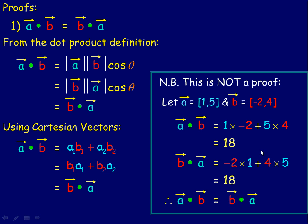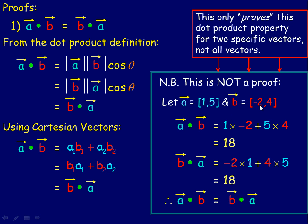Well, those are the same, that's true. But this is only an example. It is only a proof for those two specific vectors, it is not a proof for all vectors. So this only proves that it's for two specific vectors. The problem with this kind of proof is that you cannot take every single possible vector that exists, because there's an infinite number of them, and show that a dot b always equals b dot a.